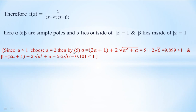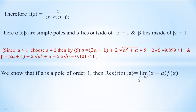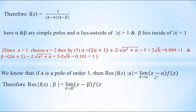With a = 2: α = 5 + 2√6 ≈ 9.899, which is greater than 1, and β = 5 − 2√6 ≈ 0.101, which is less than 1. So α lies outside the circle |z| = 1 and β lies inside the circle |z| = 1. Since α is outside the circle, we do not compute its residue. Only β lies inside the circle, so we find the residue of f(z) at β.